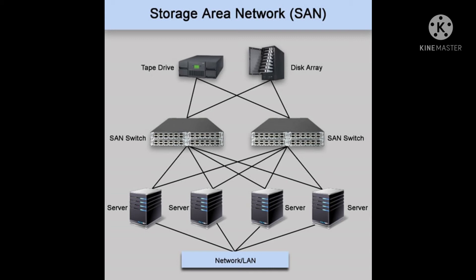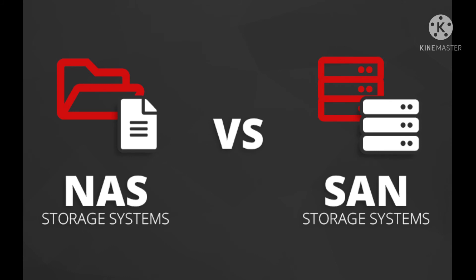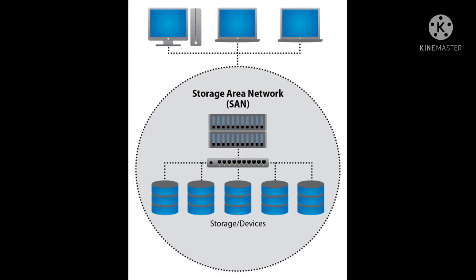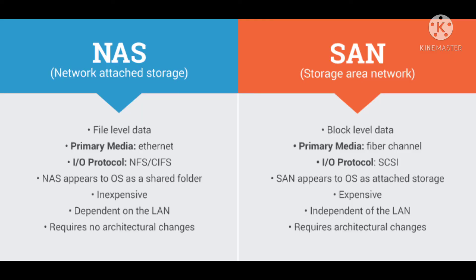If a switch, a disk array, or a server goes down, this really doesn't matter — the data can still be accessed. When a server accesses the data on a SAN, it accesses the data as if it was a local hard drive, because that is how the operating system recognizes a SAN. It is recognized as a locally attached hard drive rather than a shared network type like in a NAS.